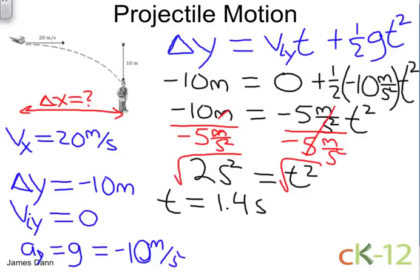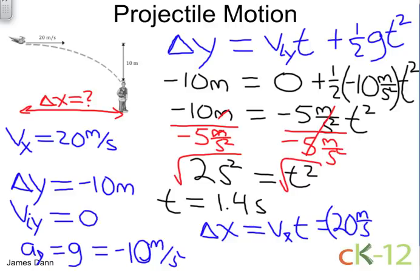Now to find the horizontal distance, that's pretty easy. We just use the fact that the change in horizontal distance is simply equal to the speed times the time. We know both of these. The speed is 20 meters per second, and the time is 1.4 seconds.